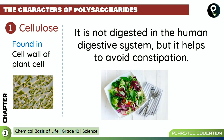Cellulose is found in the cell walls of plant cells. It is not digested in the human digestive system, but it helps to avoid constipation. So when you eat vegetables and salads, the cellulose is not digested, but it helps you avoid constipation — that is the reason you are advised to consume them.